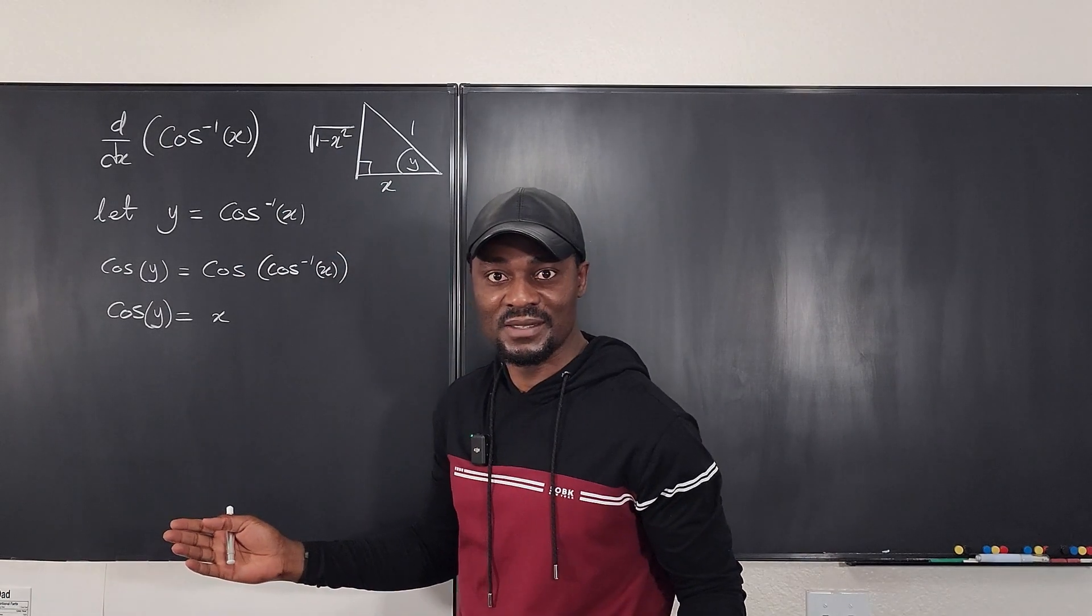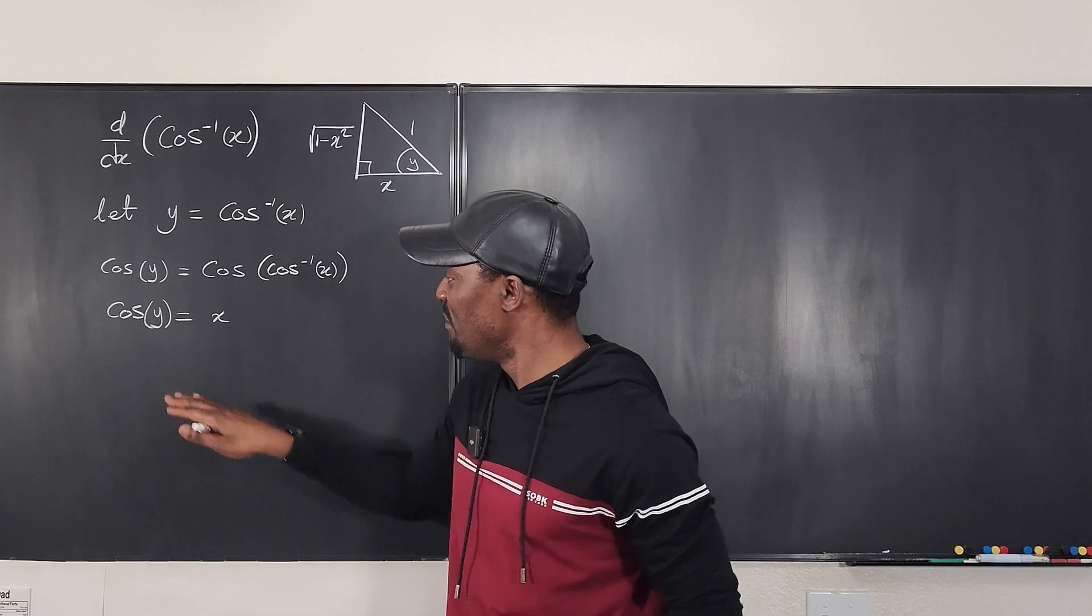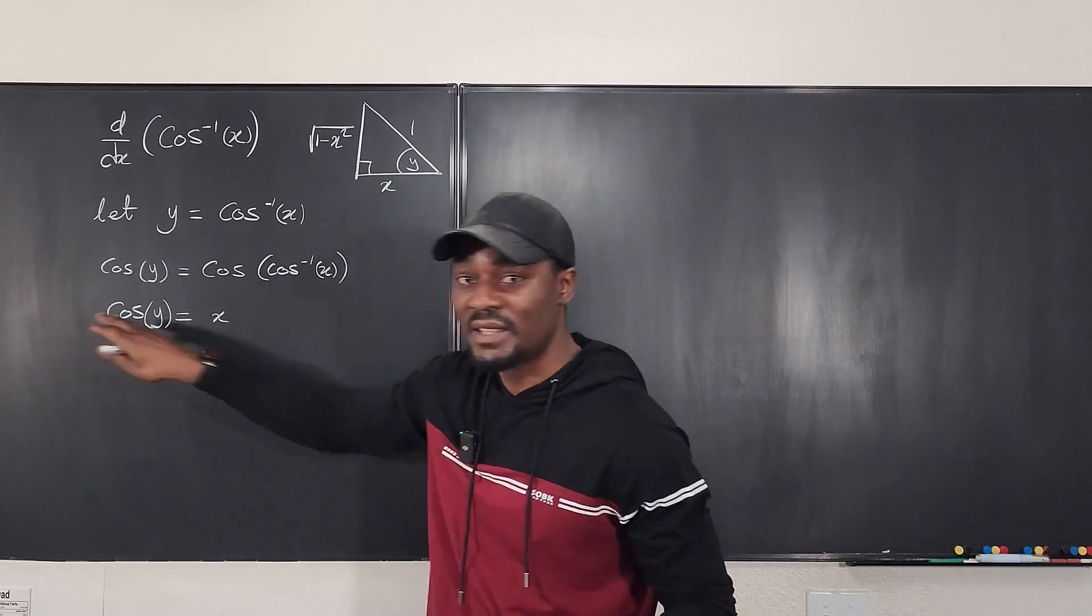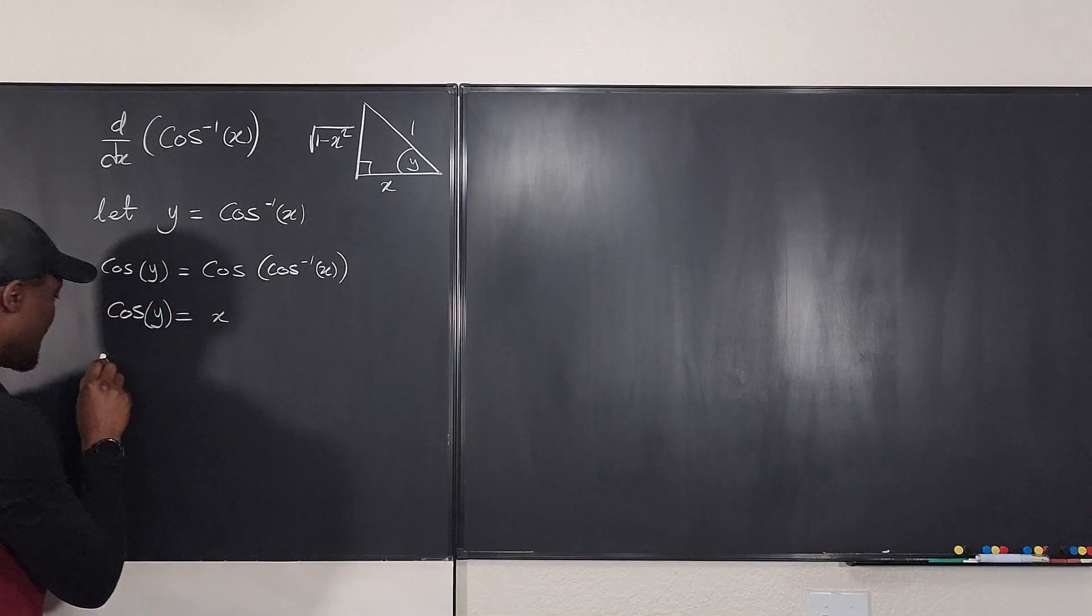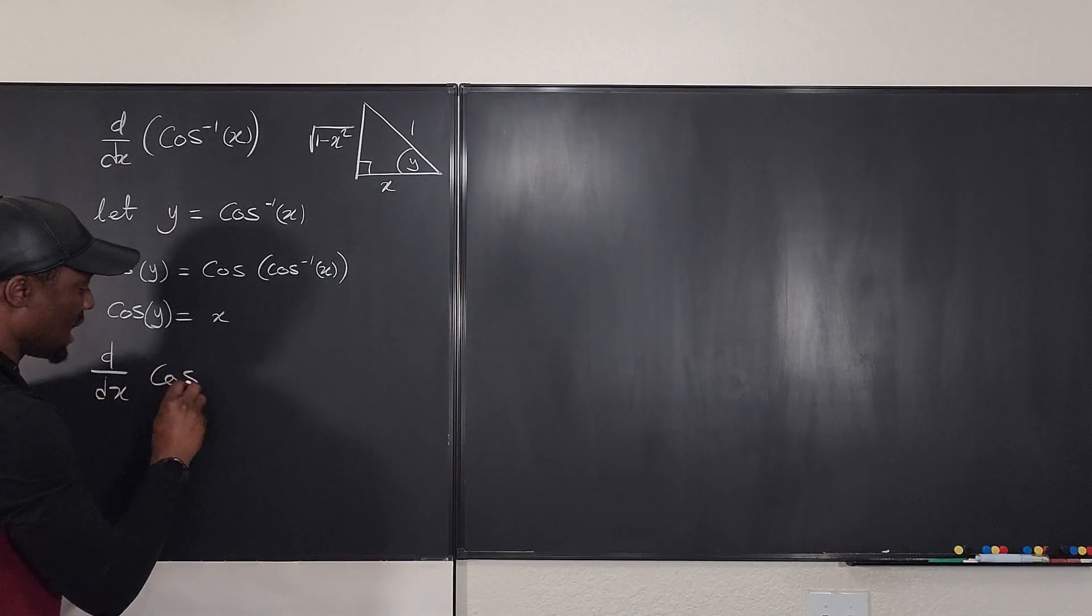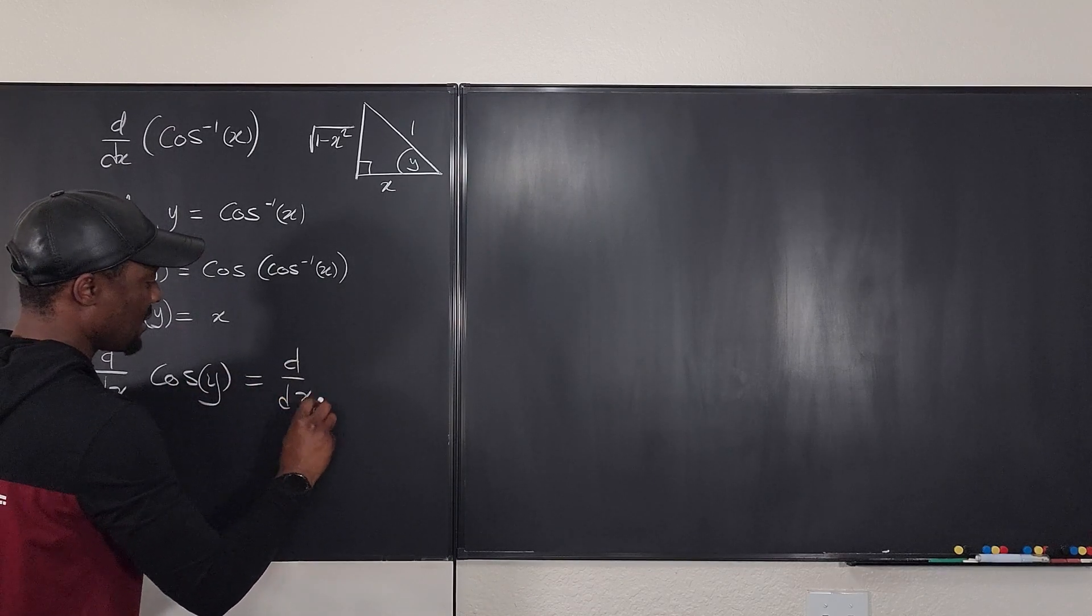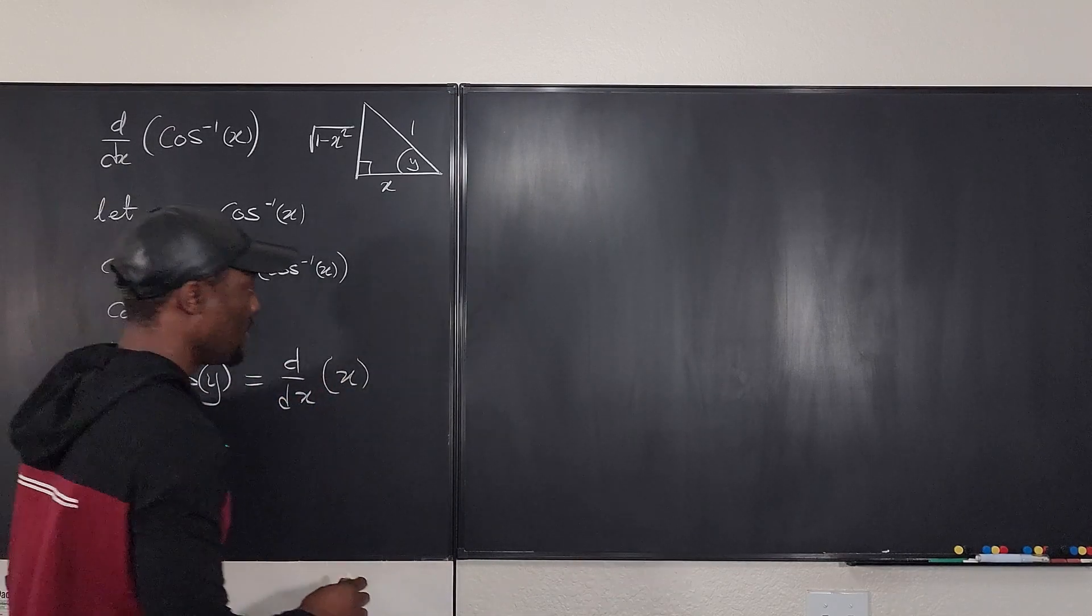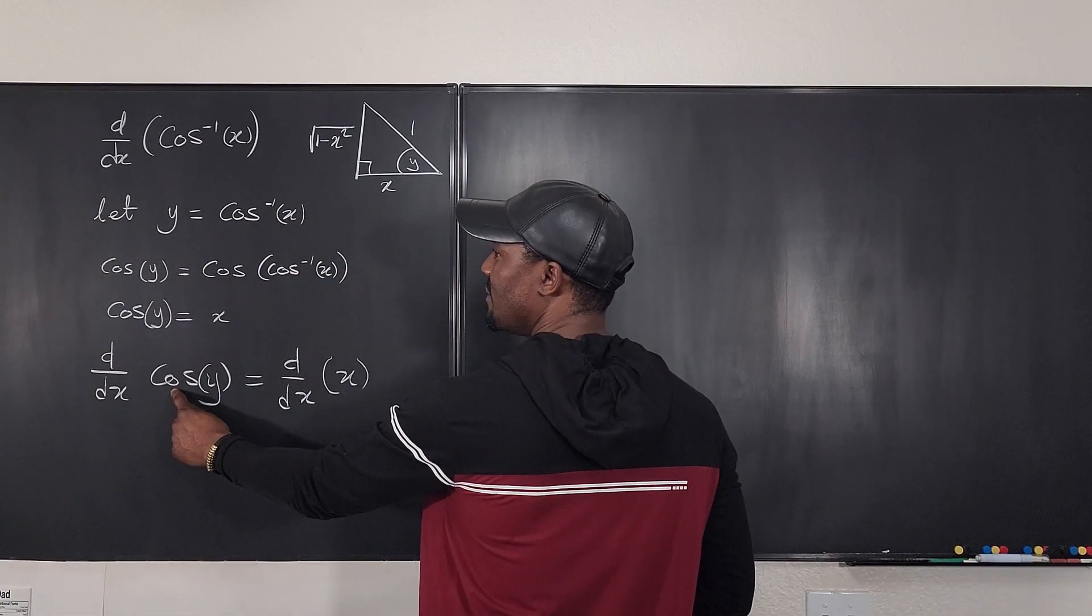Now we take the derivative of this using the chain rule. Don't forget. And it's implicit differentiation because you'll be taking the derivatives of both sides. So here you have d/dx of cosine y will be equal to d/dx of x. So if we differentiate cosine, what do we get? We get negative sine.